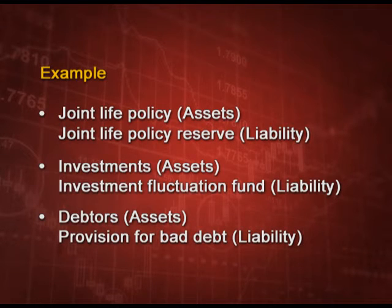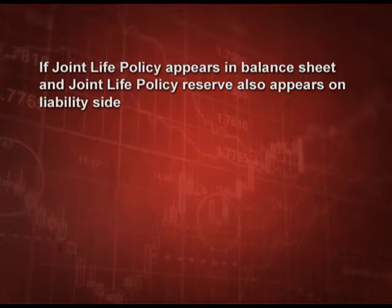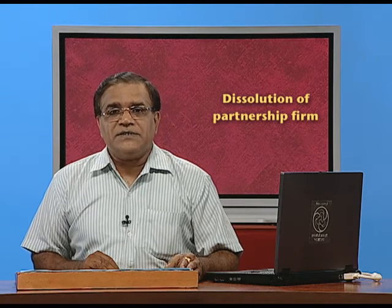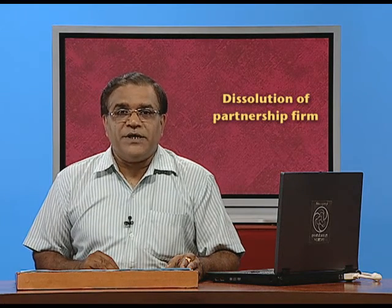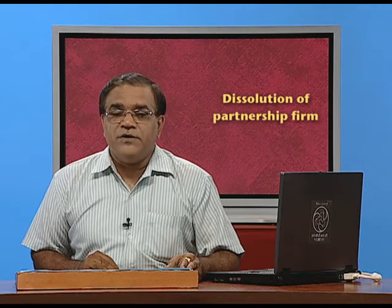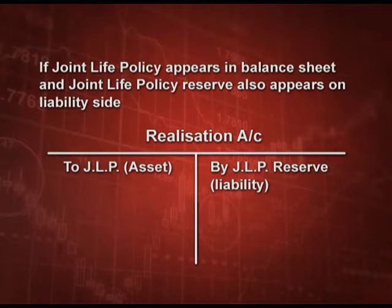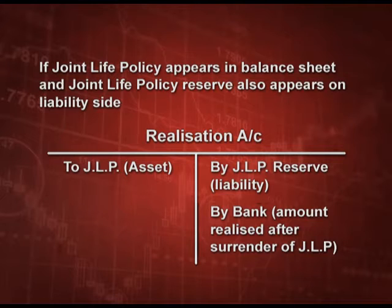Another important adjustment: if joint life policy appears in the balance sheet and joint life policy reserve also appears on the liability side, and the JLP is surrendered — surrendered means given back to the insurance company and some cash is obtained. We will show it in the following manner: the debit side of the realization account will have joint life policy; the credit side will have joint life policy reserve as discussed previously. Whatever money we are receiving will again come on the credit side — that is, bank account debit to realization account with the amount received from the surrender.